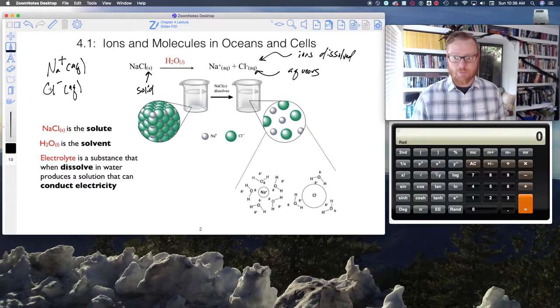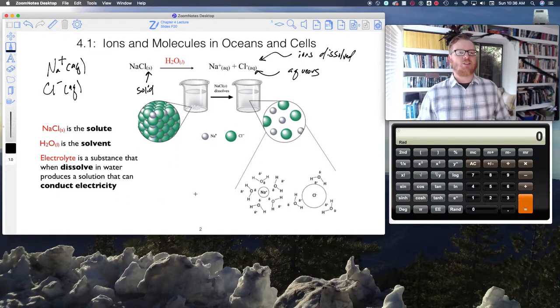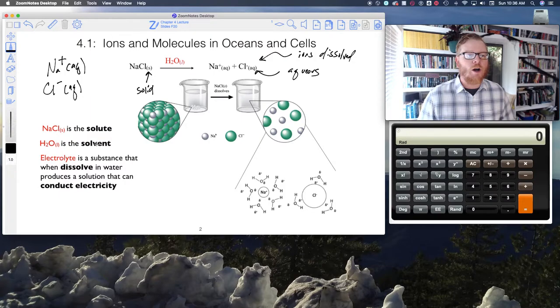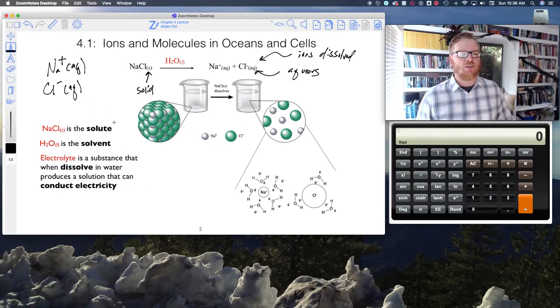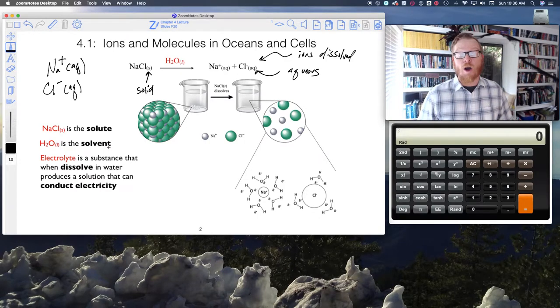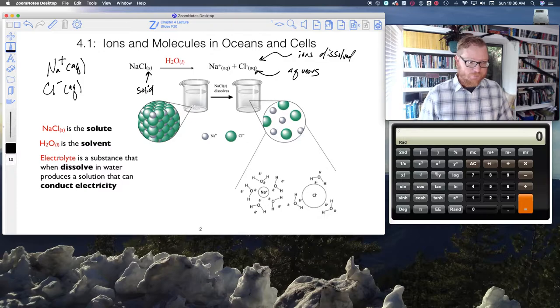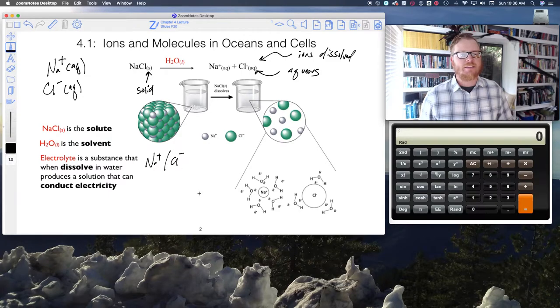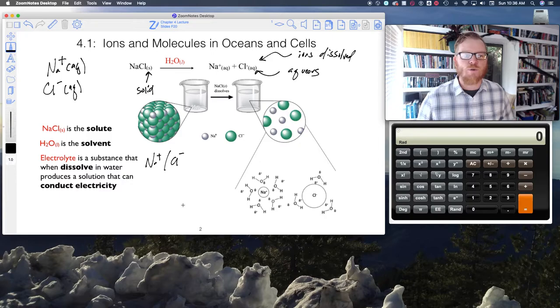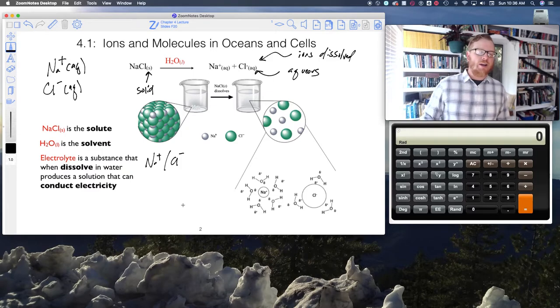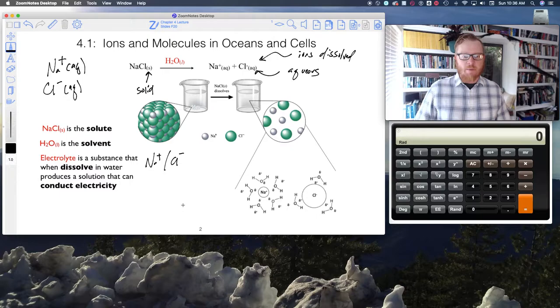In this situation here, we would call NaCl the solute, we would call the liquid water the solvent. It is dissolving the solute. And when this happens, when we use water to dissolve sodium chloride for example, it makes an electrolyte. Sodium chloride is an electrolyte: the Na plus and the Cl minus. It is a substance that when dissolved in water can produce a solution that will conduct electricity. I'm going to try to rig up a demo of this for you, and if I can't rig up a demo then I'll comment on some YouTube comments.